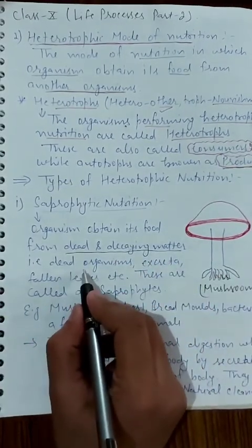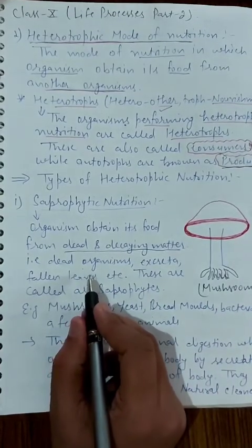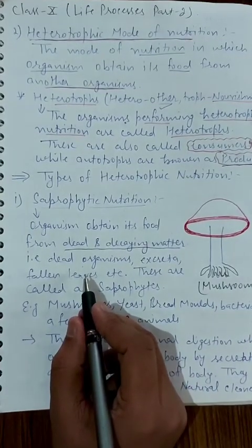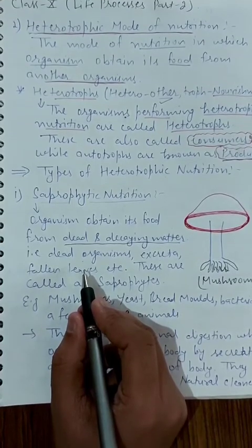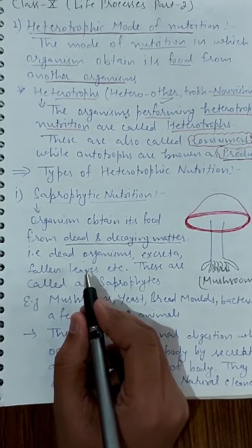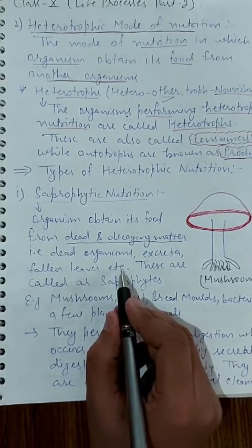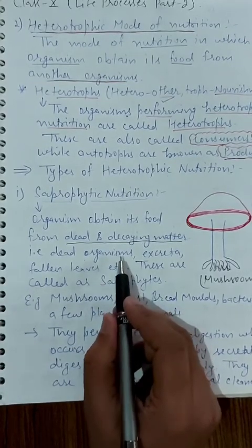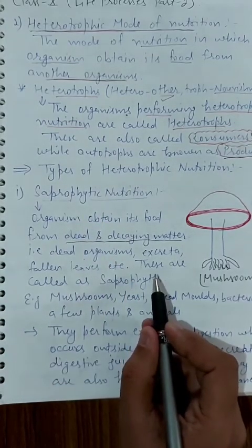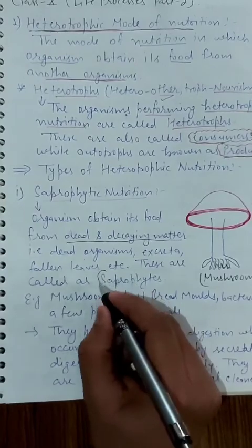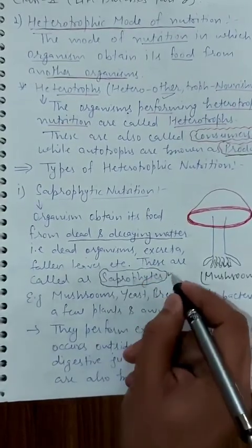Saprophytic nutrition means an organism obtains its food from dead and decaying matter — for example, dead organisms, excreta, and fallen leaves. Where a dead plant or dead organism is decomposed to derive energy. This mode is called saprophytic mode of nutrition.